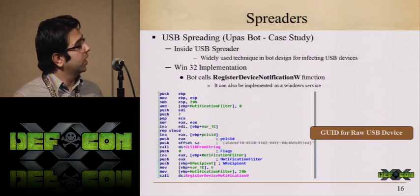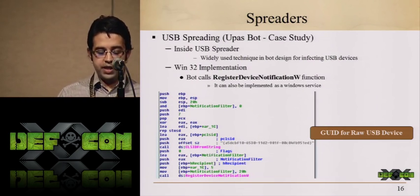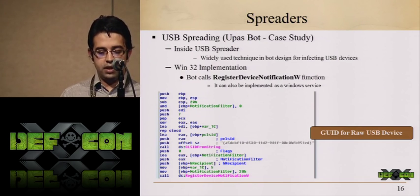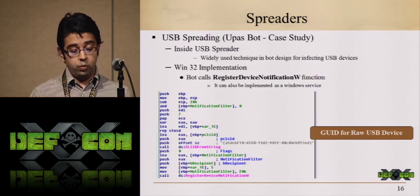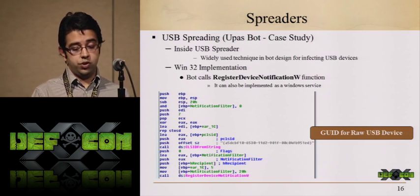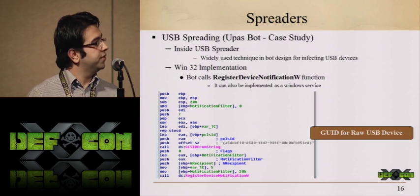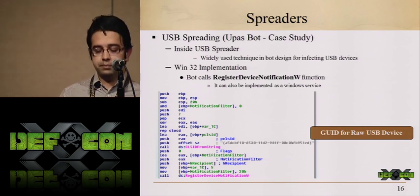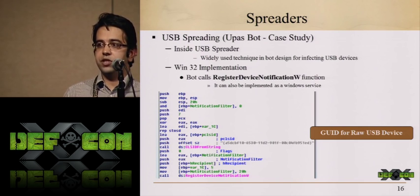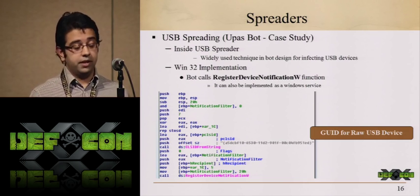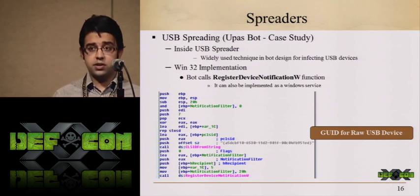Now let's talk about spreaders. We were analyzing uPass bot, a new upcoming breed of botnet — pretty sophisticated. They implemented a good spreader called a USB spreader. This technique worked previously and is still working fine. On your infected system, when the bot is there, it creates a monitoring service that looks for what kind of USB you insert. Whenever a plug-and-play device is inserted, it releases the RegisterDeviceNotificationW function, a Windows built-in API.